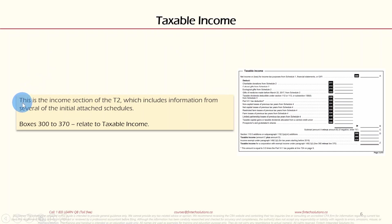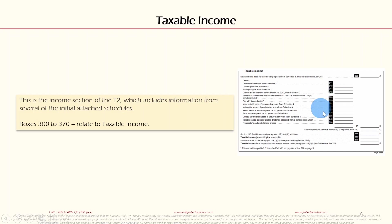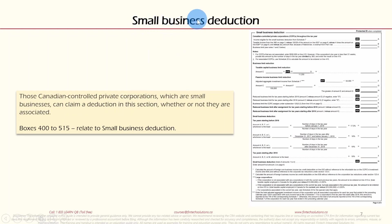Section 4 is Taxable Income — the income section of the T2 — which includes information from several of the initially attached schedules. Boxes 300 to 370 relate to taxable income. Your Schedule 1, Schedule 2, and Schedule 4 will all feed into this section, along with the GIFI statements. This is a very important part because it determines your taxable income. In a future video I'll cover GIFI statements in detail.